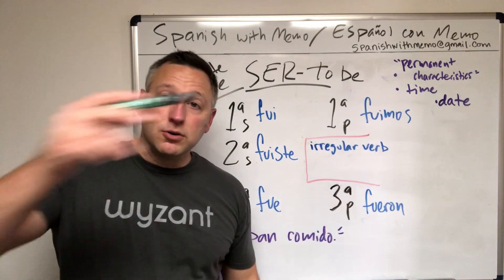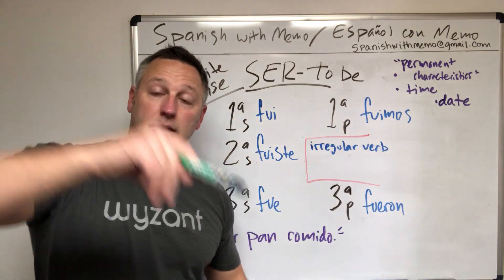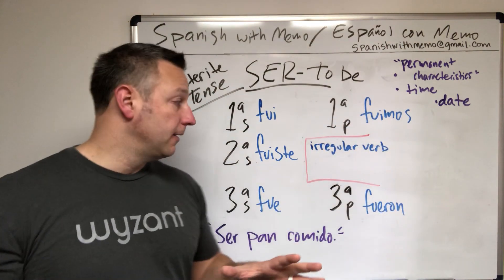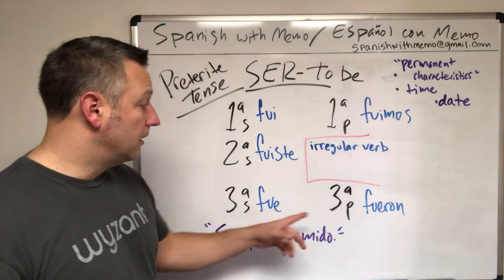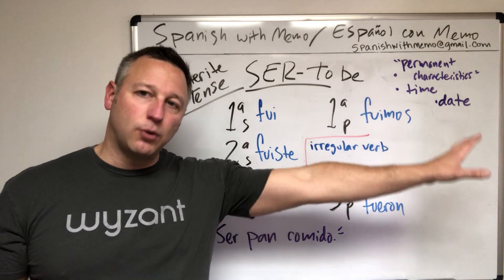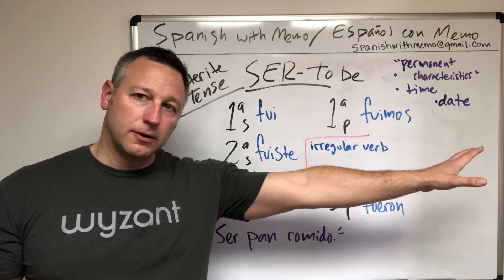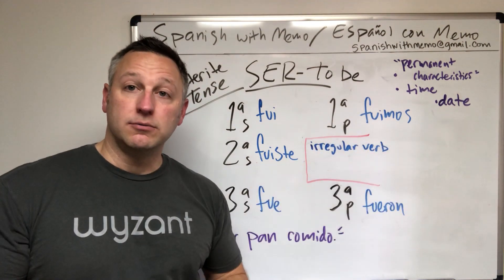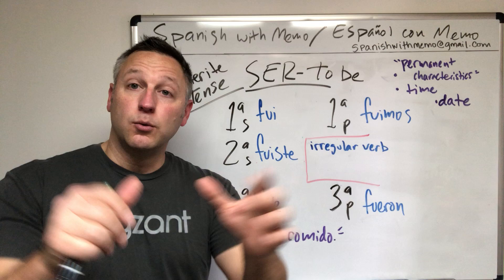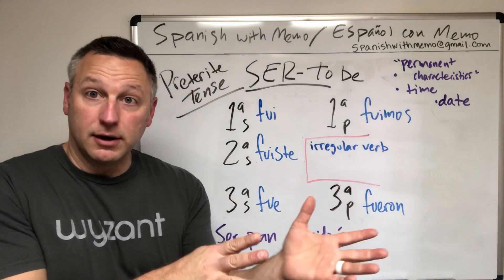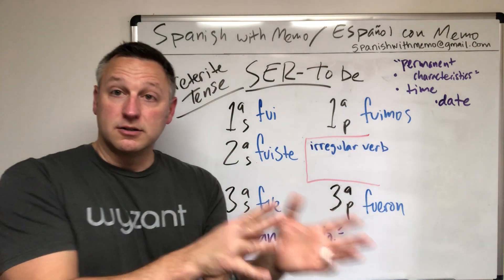Nosotros fuimos — we were. Third person plural: ellos fueron — they were. Ustedes fueron — y'all were. Los perros fueron — the dogs were.